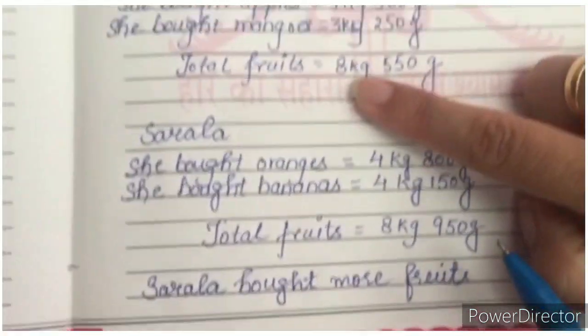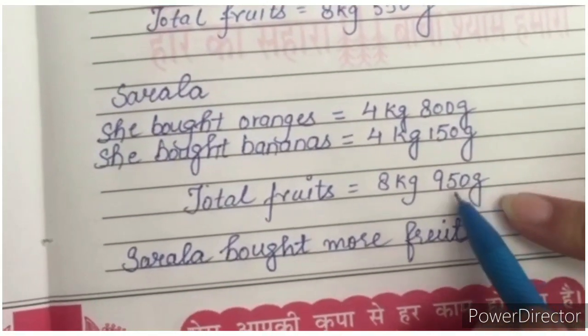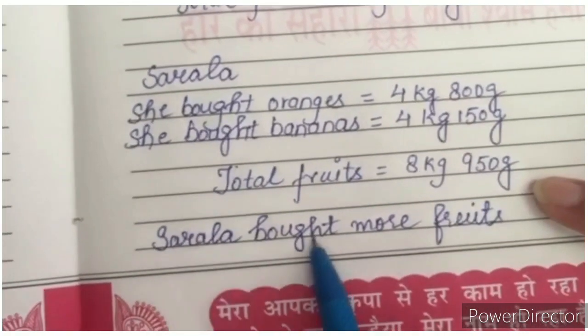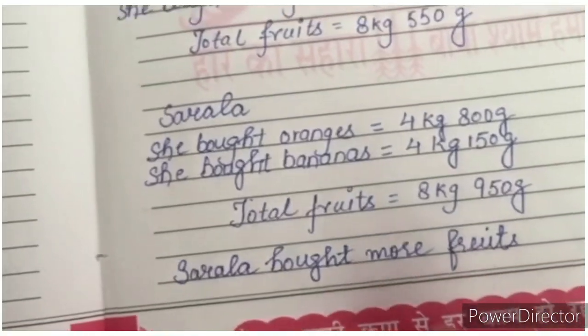8 kg 550 grams. 8 kg 950 grams. So who has bought more fruits? Sarla bought more fruits. We will not find difference because they did not ask how much.